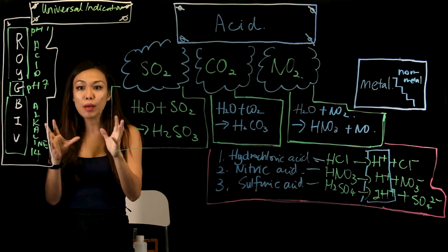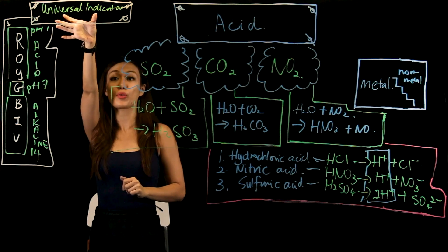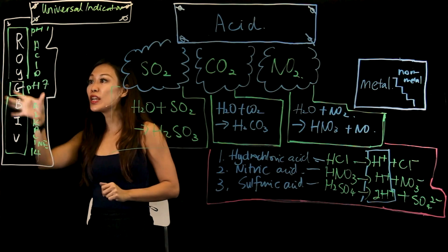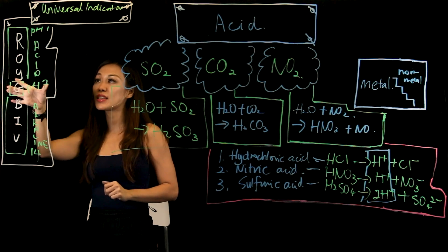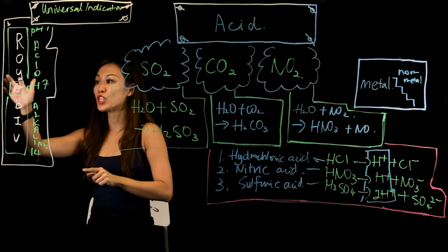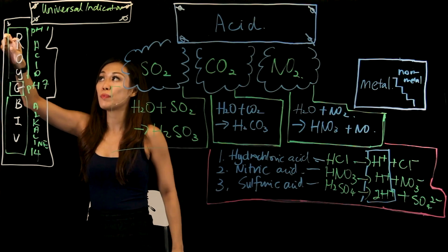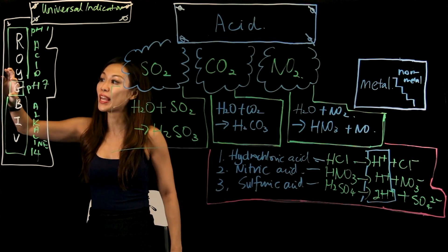Now, how do you test whether something is acid? Well, one of the most common things is, of course, you use your universal indicator. Universal indicator shows here that if it's acid, you will see a red in color. Red, orange, yellow. Of course, the more acidic it is, the color will be over here. This is the weak acid.